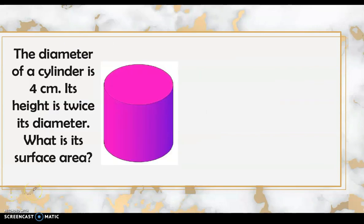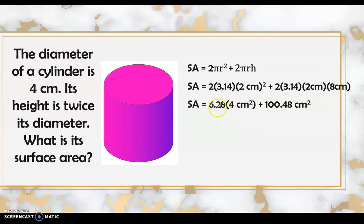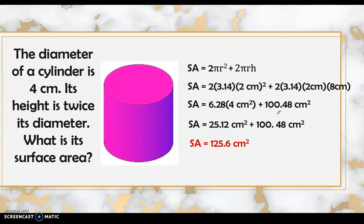Now let's apply surface area of a cylinder in a word problem. The diameter of a cylinder is 4 centimeters and its height is twice its diameter. What is its surface area? We write the formula: 2πr² + 2πrh. The radius is 2 centimeters since the diameter is 4 centimeters. The height is twice the diameter, so 4 times 2 equals 8 centimeters. Substituting and simplifying: 6.28 times 4 plus 100.48 gives a surface area of 125.6 square centimeters.